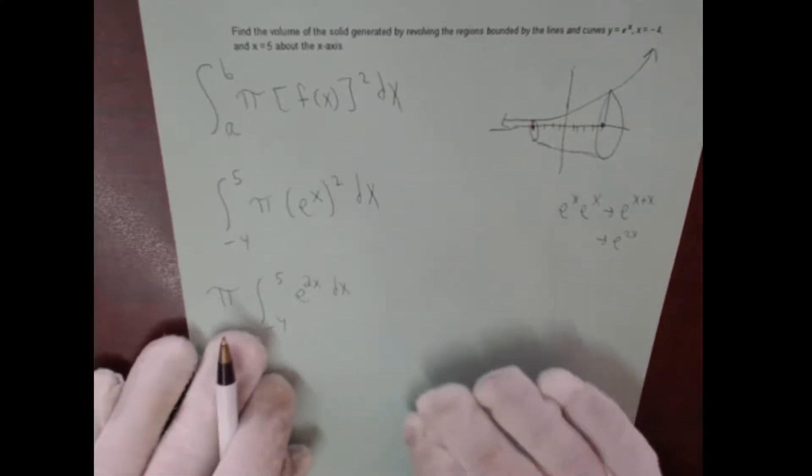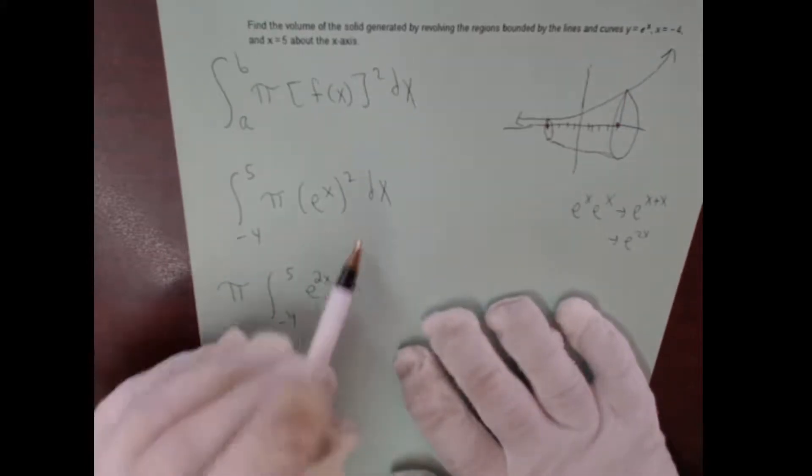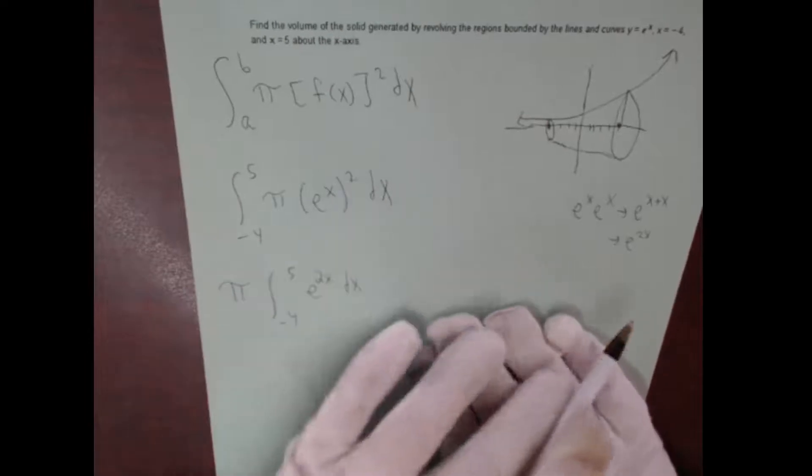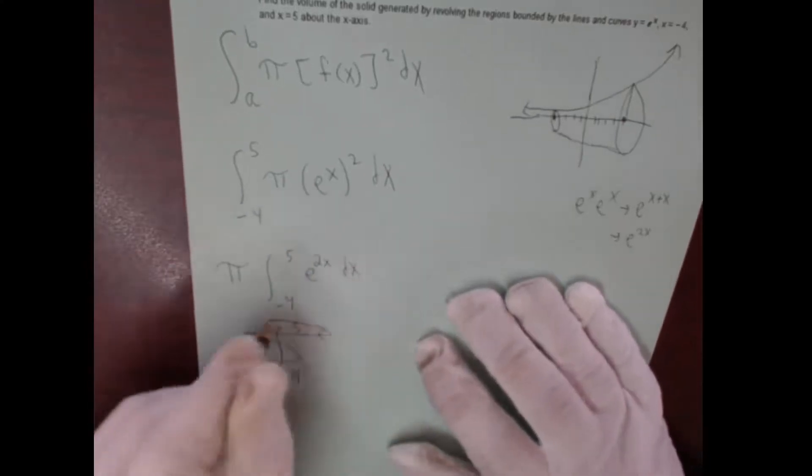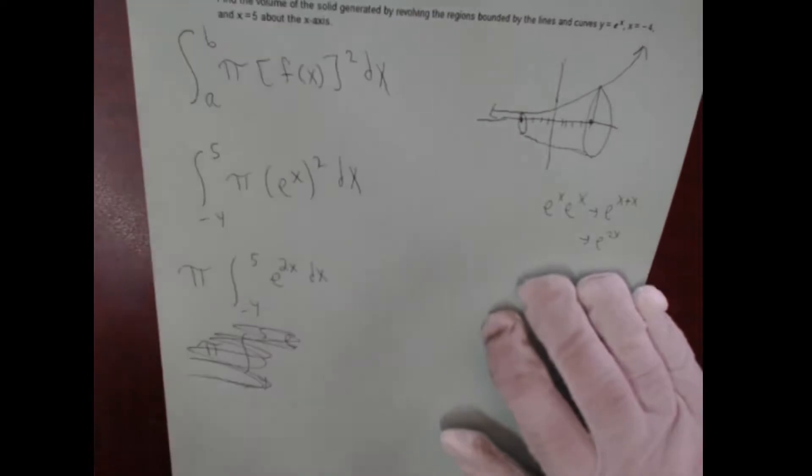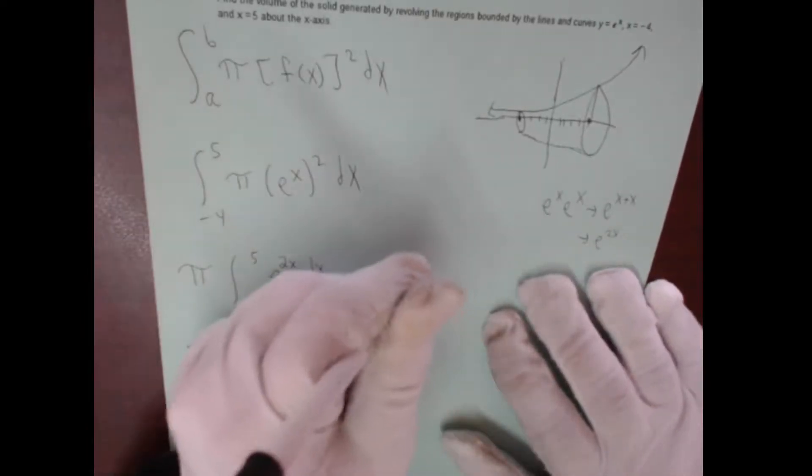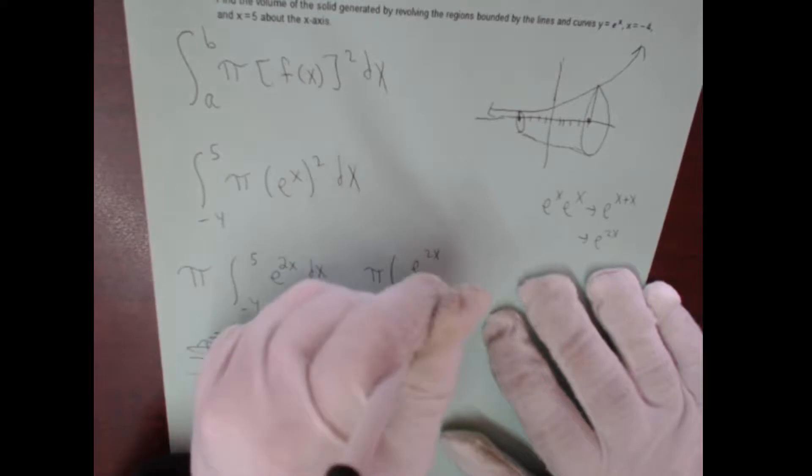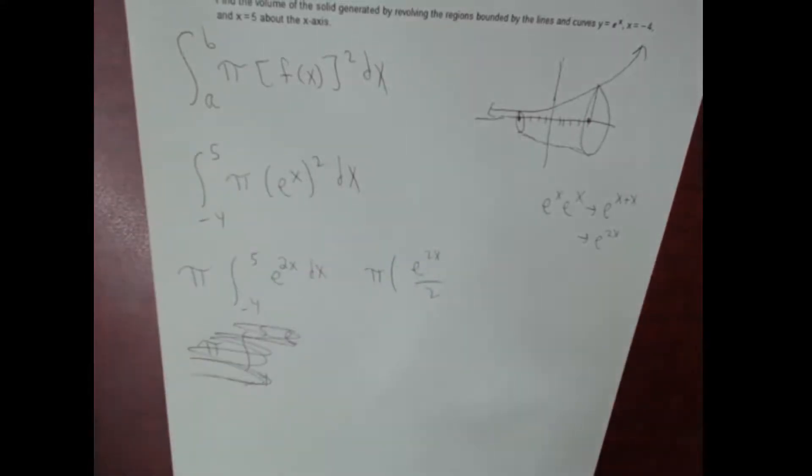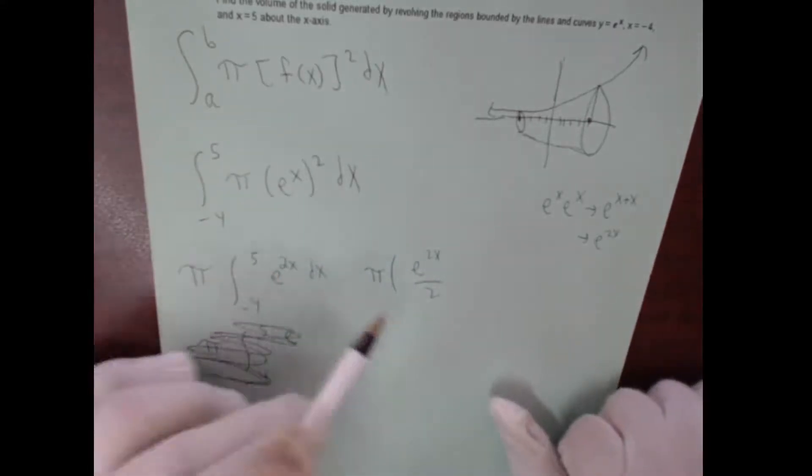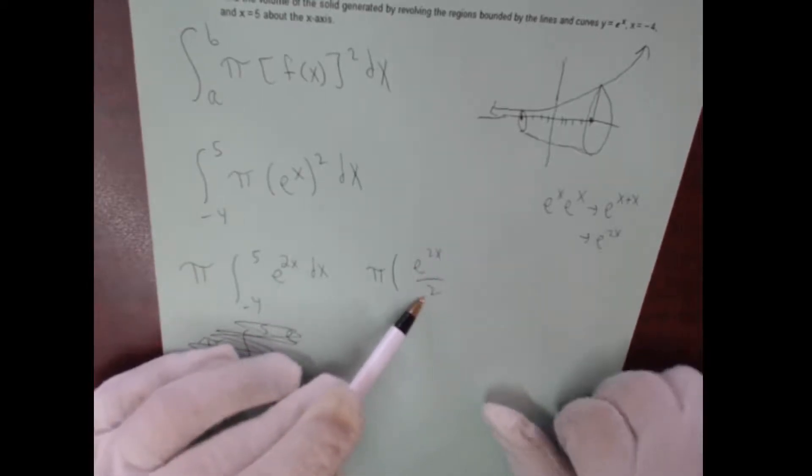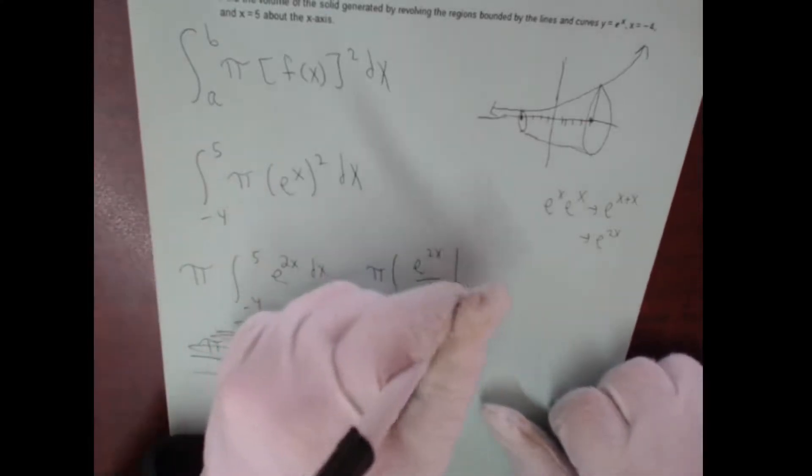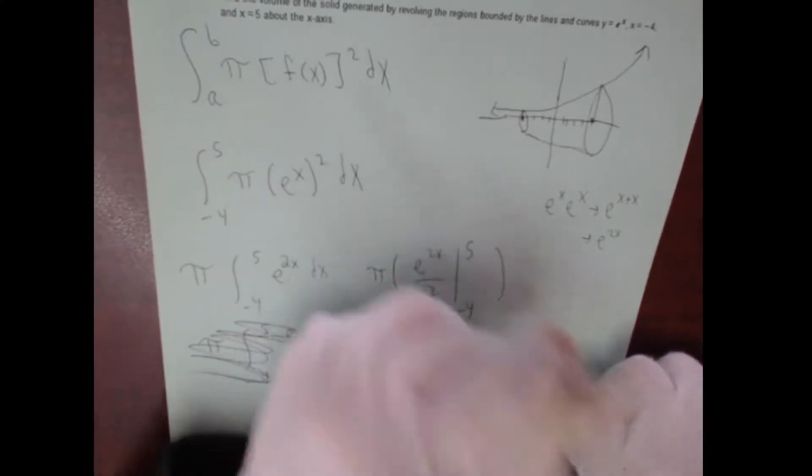So there we go. It's not e to the x squared, be careful with that. This is not e to the x squared, it's e to the 2x. All right, take the integral. It'll be pi times e to the 2x over 2, because you take the derivative of e to the 2x over 2 you get a 2 left over from the chain rule which cancels the 2 and gets us back to e to the 2x. And we'll evaluate that from negative 4 to 5.